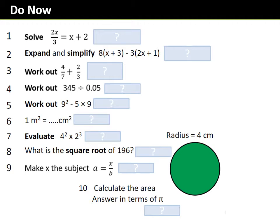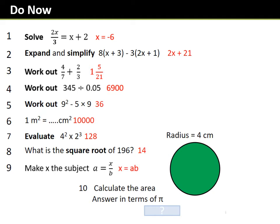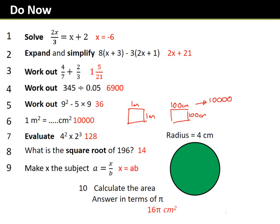Okay, so the answers are on screen. Perhaps the only really tricky one is the metre squared question. As always, I draw out one metre by one metre — but we say 100 centimetres by 100 centimetres — and then we can see these areas are identical, and this one is 10,000 centimetres squared.